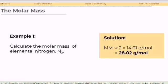Solution. Elemental nitrogen has two nitrogen atoms, so the molar mass of the elemental nitrogen can be determined by multiplying two by the molar mass of nitrogen atom, 14.01 grams per mole. Thus, the molar mass is equal to 28.02 grams per mole.